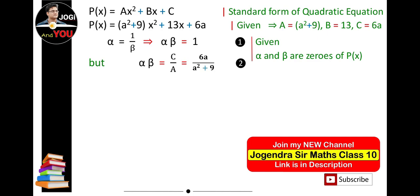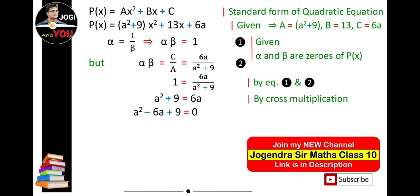Now we can see that the left side of both equations are the same, which means the right side is also the same. So we can write 1 = 6a/(a² + 9). By cross multiplication, a² + 9 = 6a. By transferring 6a to the left side, we get a² - 6a + 9 = 0.